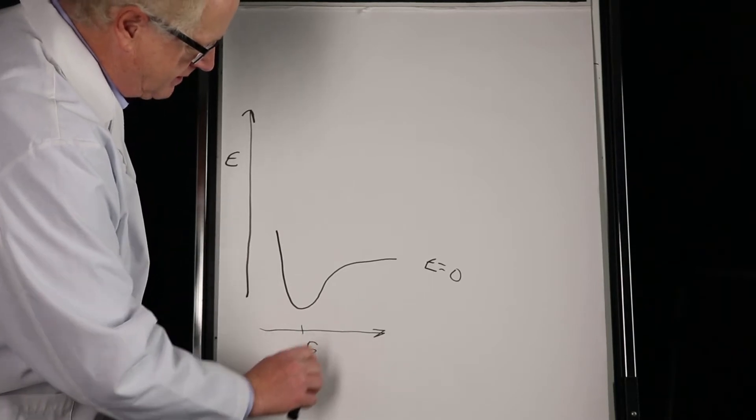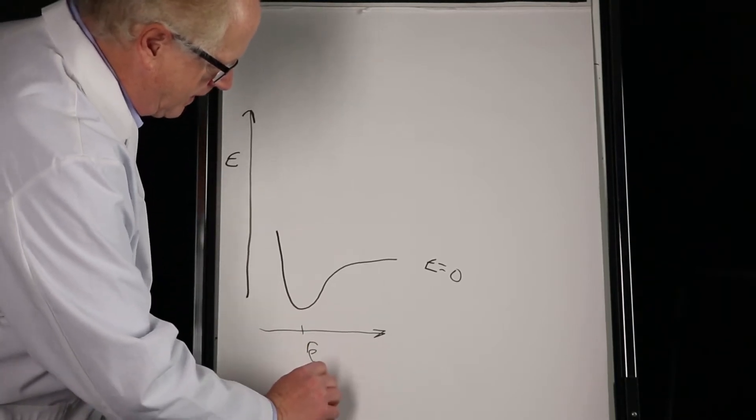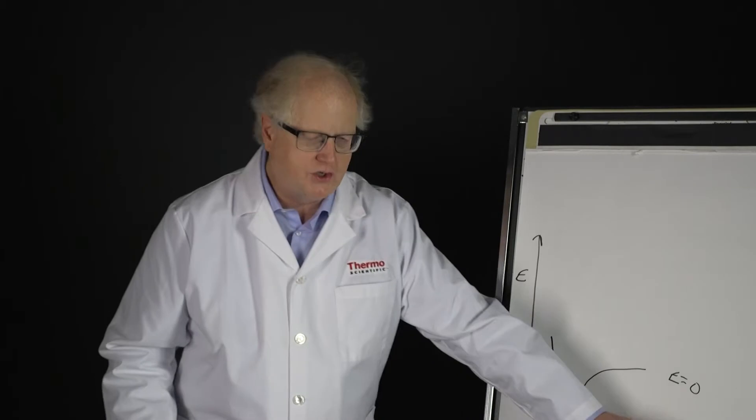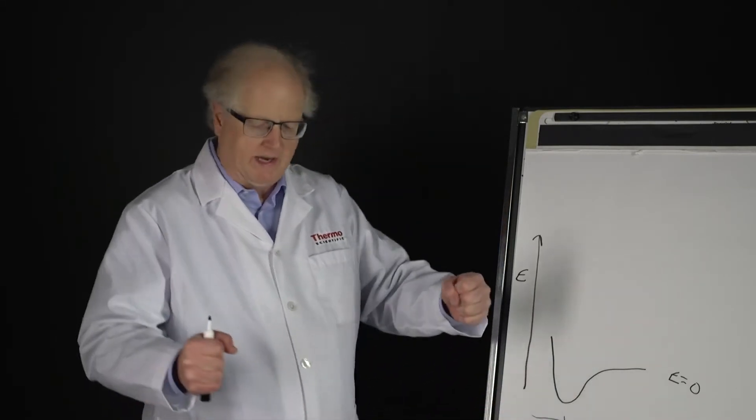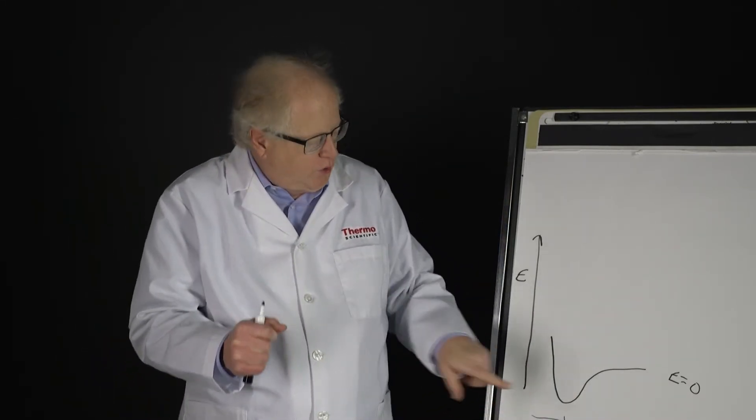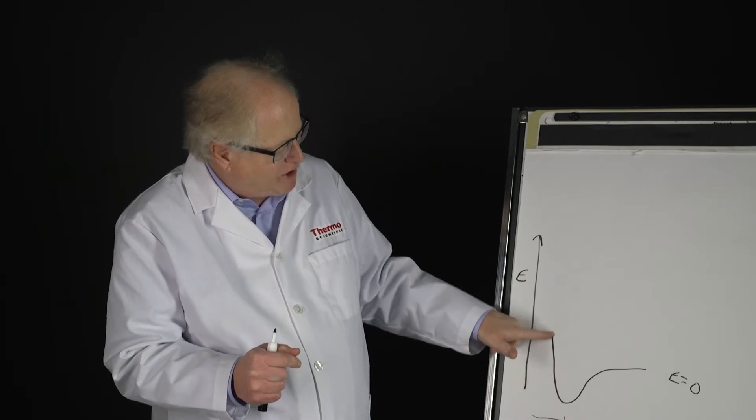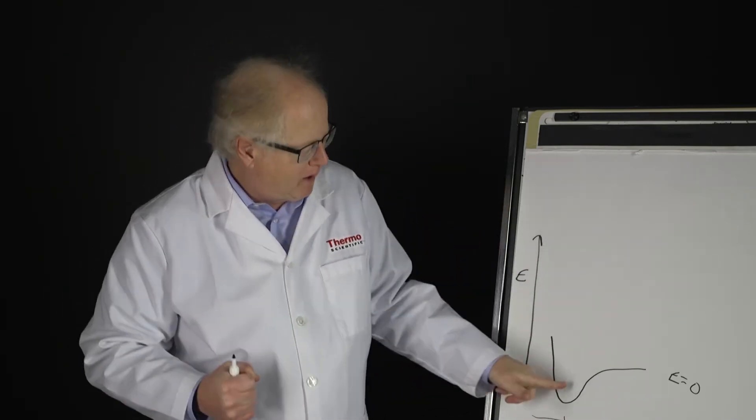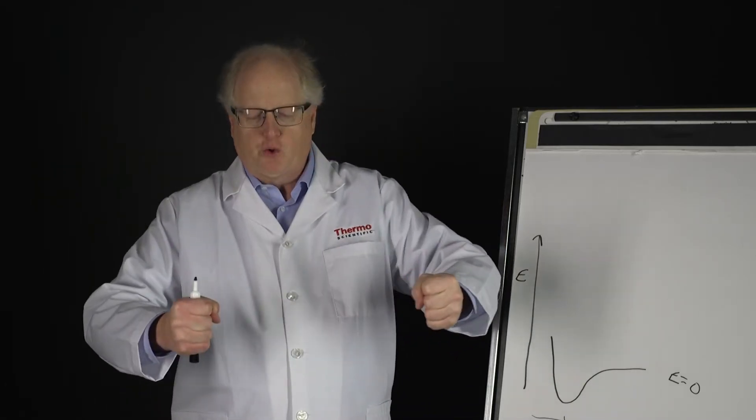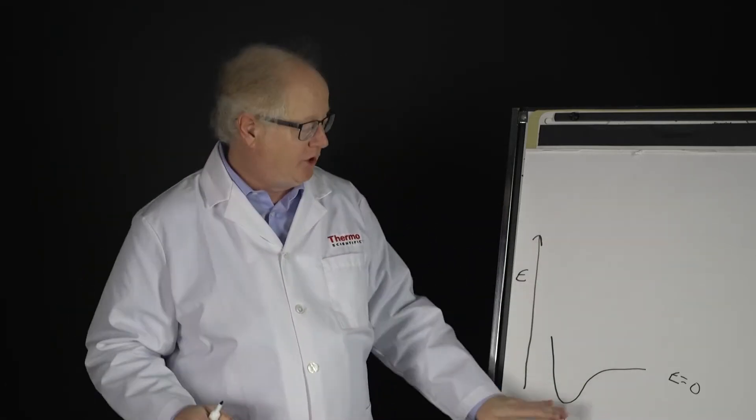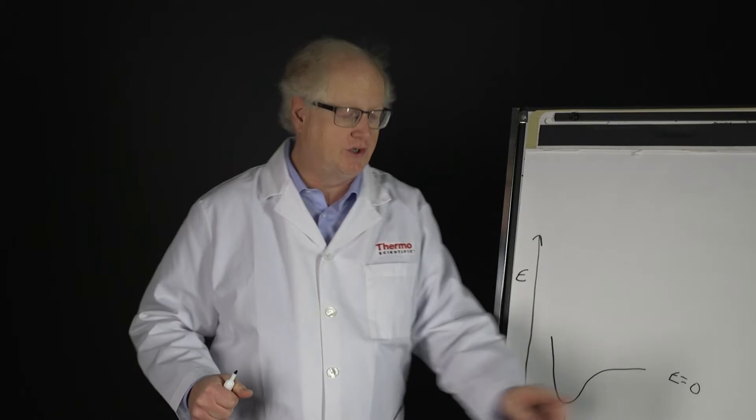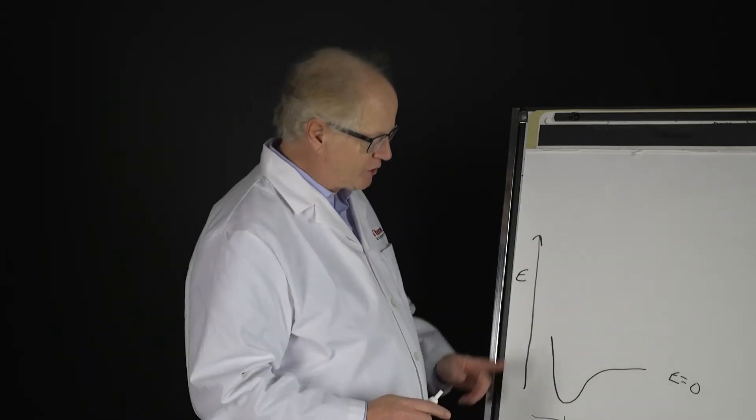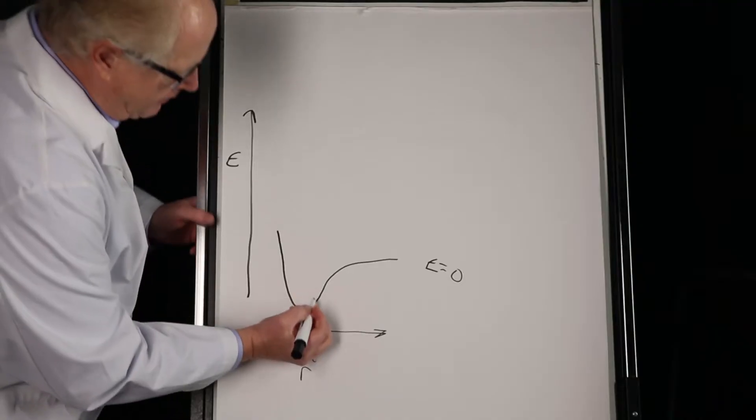And this point right here is going to be called R sub E, the equilibrium bond distance. So R is changing back and forth along this axis. As that bond length is shorter and shorter, the atoms don't like being pushed together so the energy skyrockets. As you pull them apart going this way, eventually the bond snaps and you get the thing flattening out and the energy level just flattens out.